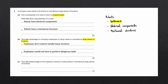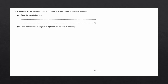Question C asks for one disadvantage to the company's owners of using robots to manufacture large pieces of furniture. Manufacturing large furniture requires large, very expensive machinery to install and set up. If the robots malfunction, production may stop and there would be high maintenance costs. Question 10. A student uses the internet for schoolwork to research what is meant by pharming. State the aim of pharming — the main purpose is to obtain personal data from a user.